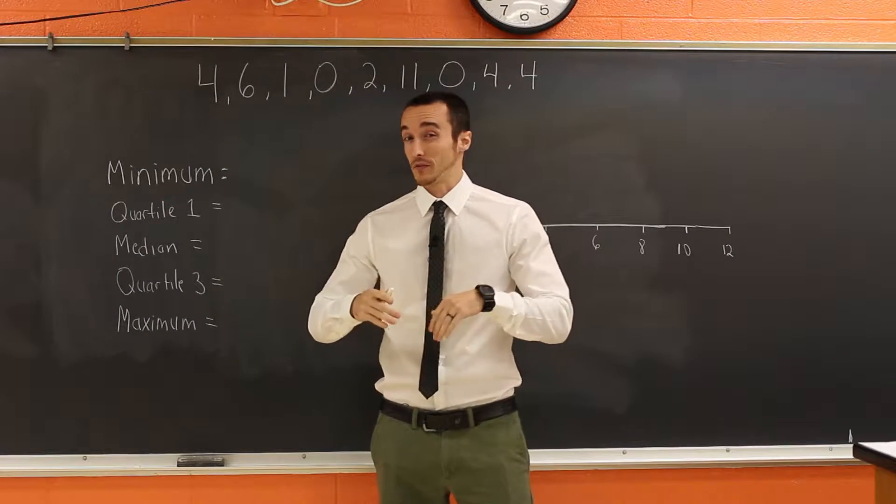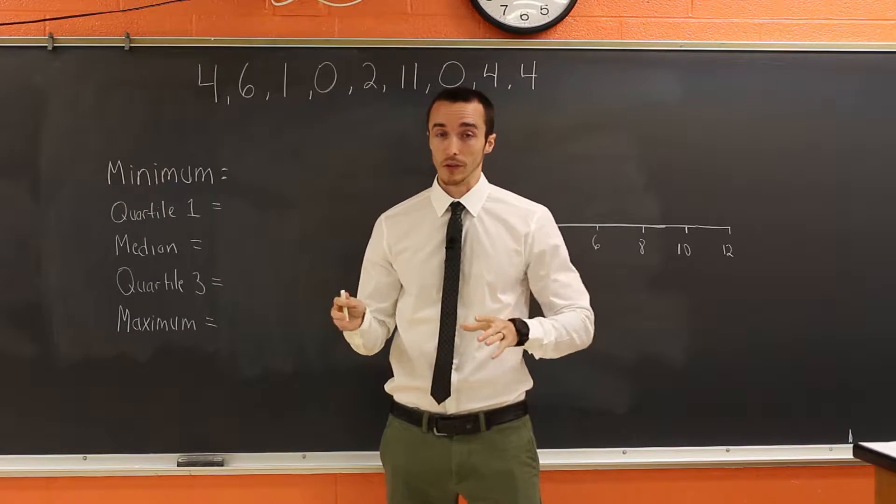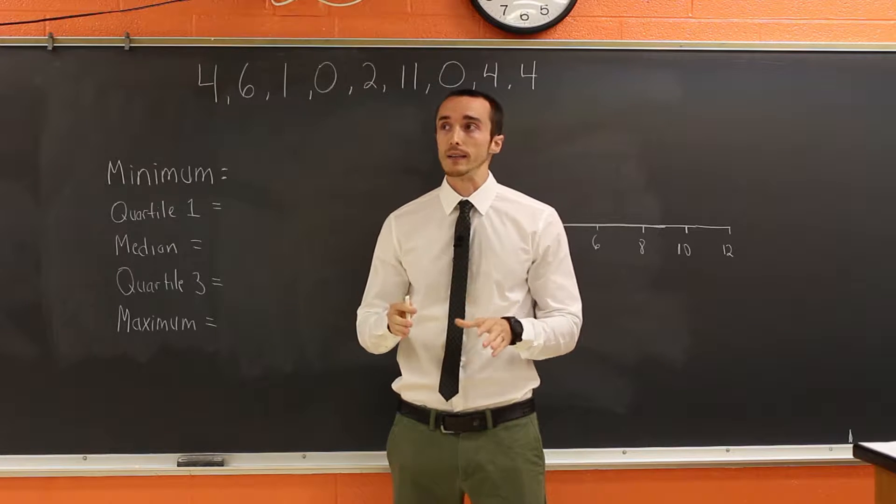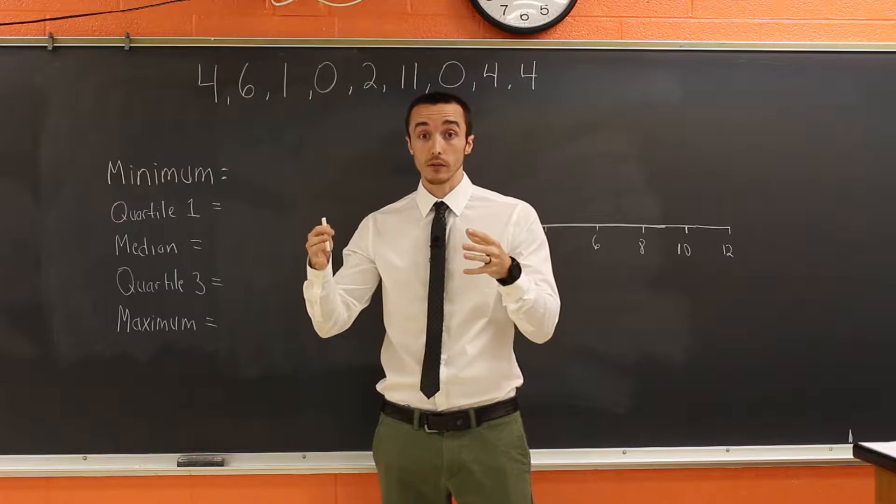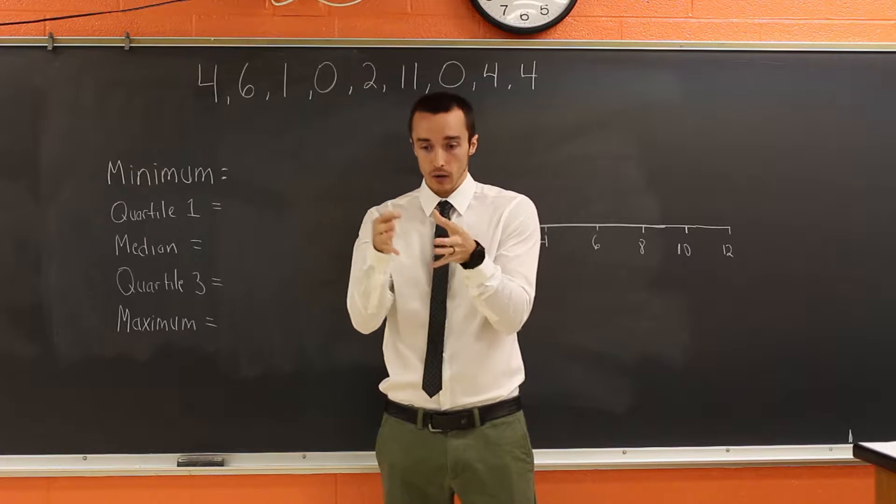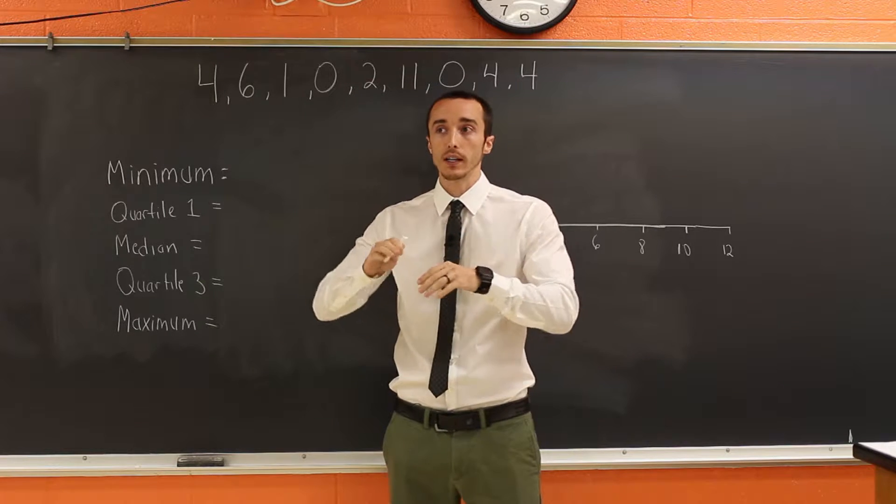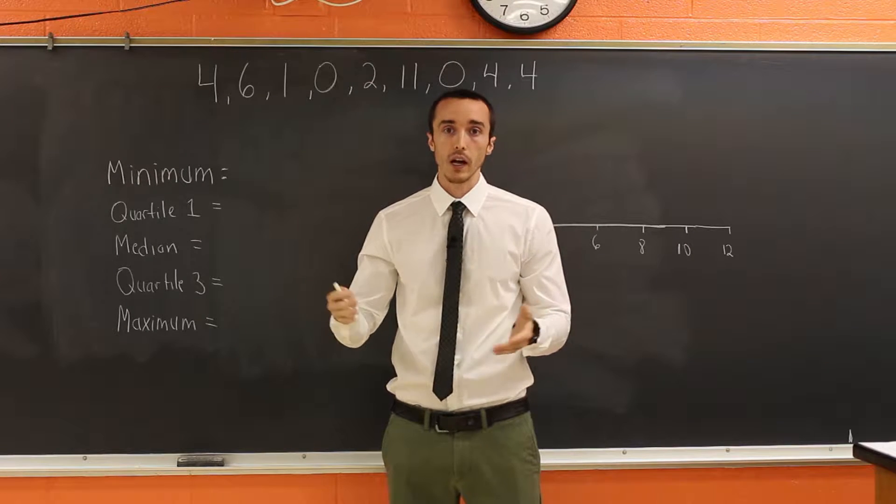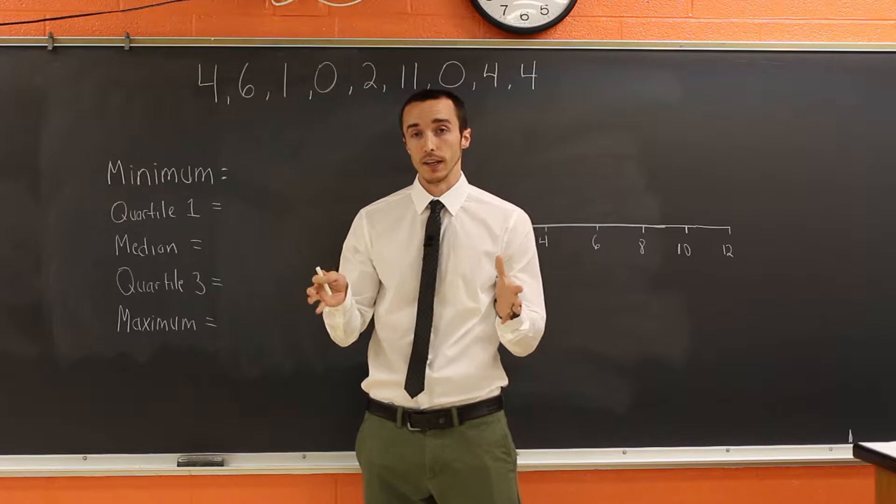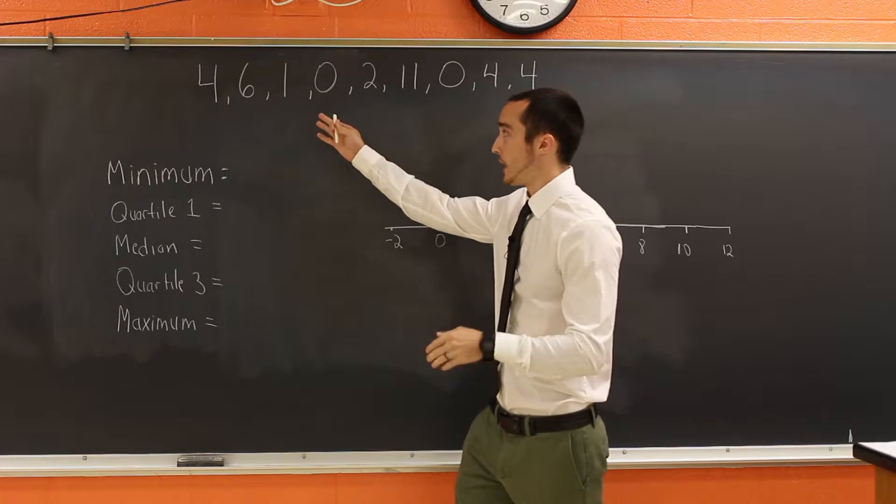So let's start off by just figuring out what is a box and whisker plot. Well, a box and whisker plot is a way to display your data and to show how either how spread out it is or how tightly compacted it is. If you have data that's kind of all over the place, a box and whisker plot is a really good way to represent where your information is at.